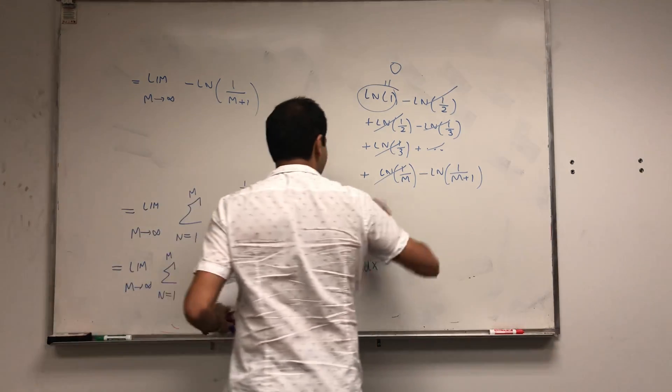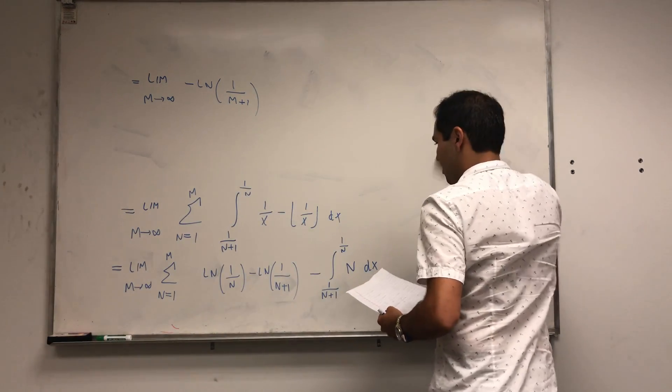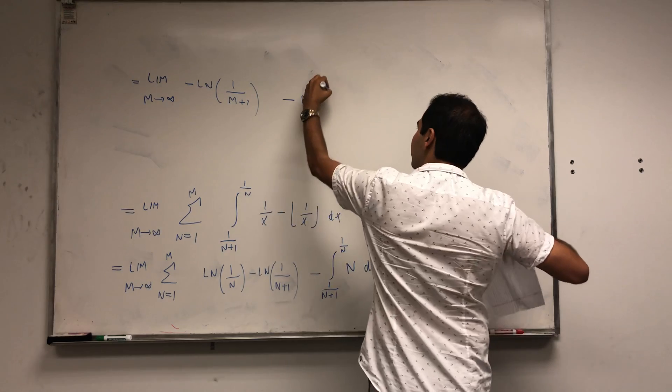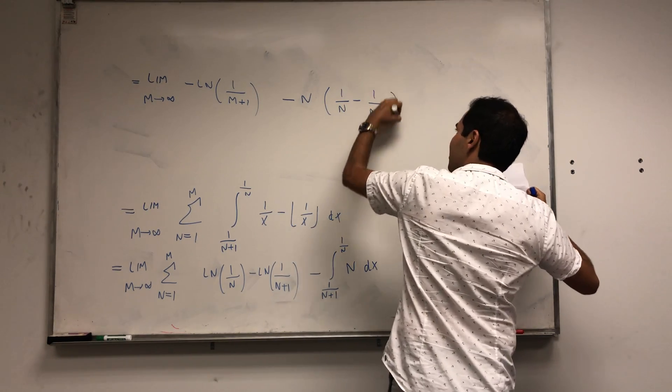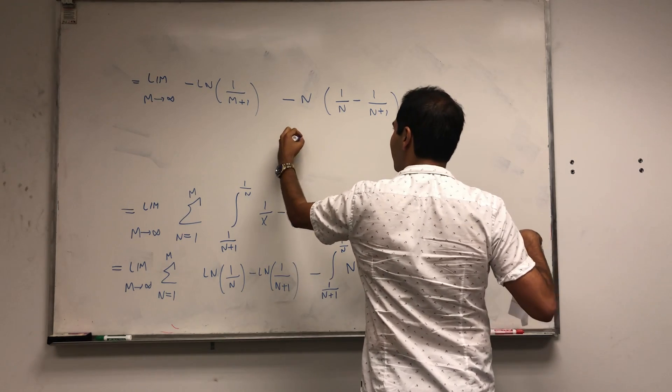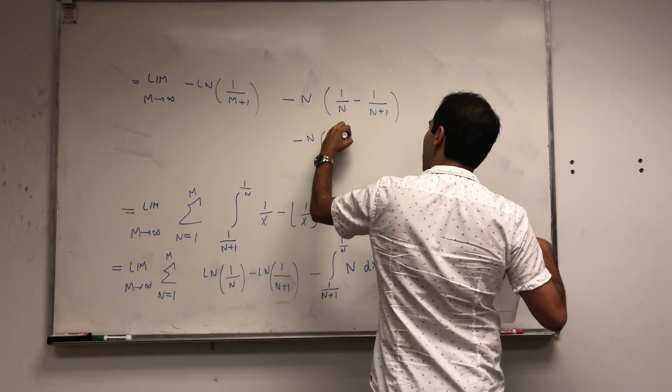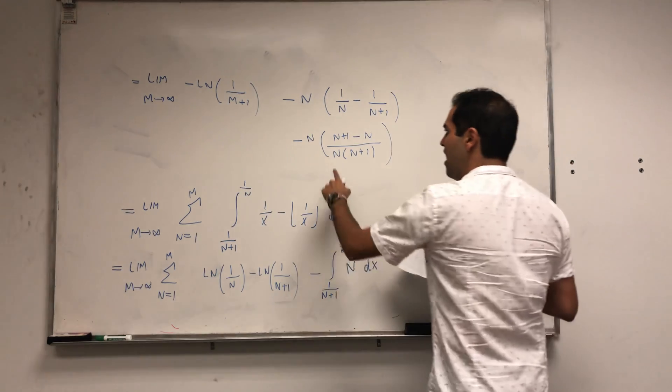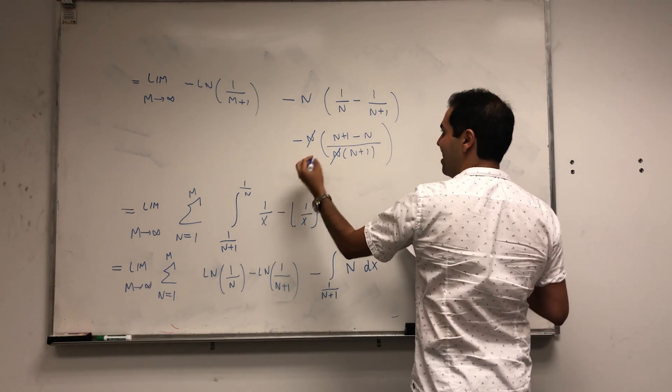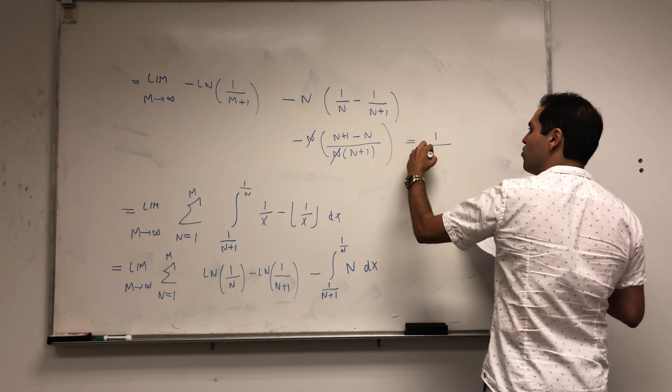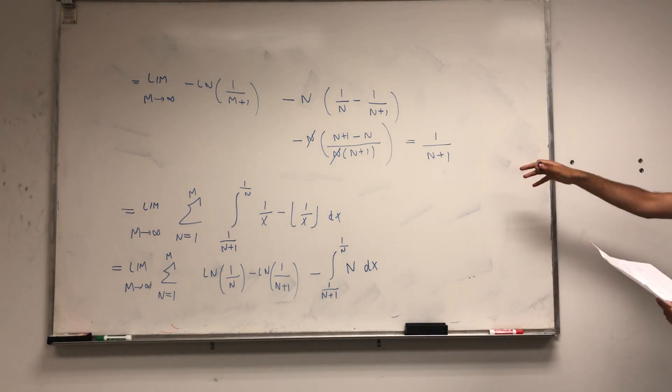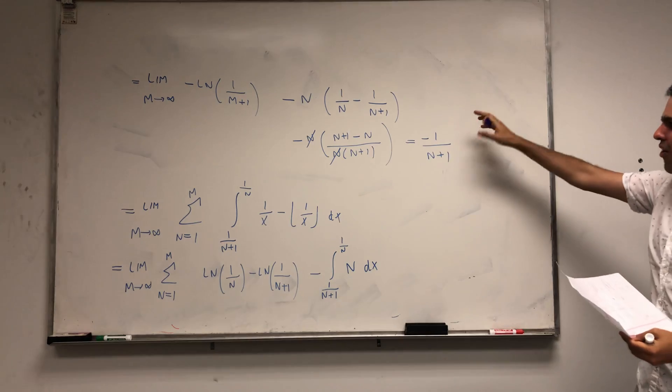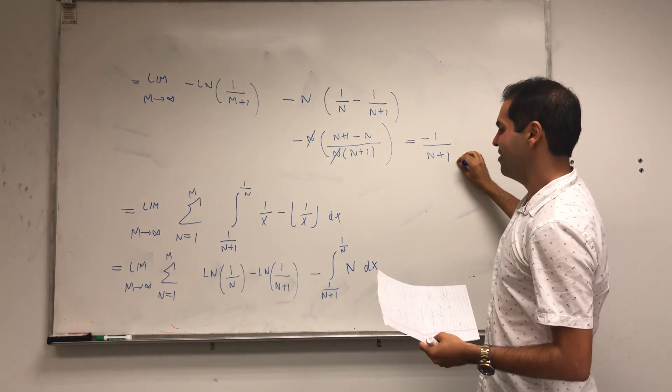So this huge ln thing is actually not that bad. And now, let's take care of this second integral. Because this is a constant, you get minus n times 1 over n minus 1 over n plus 1. But this, you can simplify, so it's minus n times n plus 1 minus n over n times n plus 1. And you're left with, this n is cancelled out, and in the end, you have minus 1 over n plus 1.